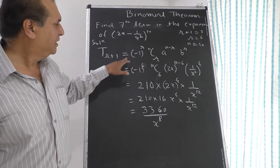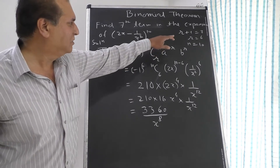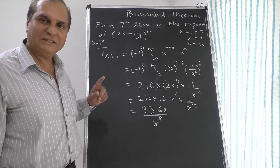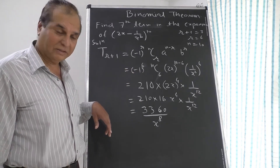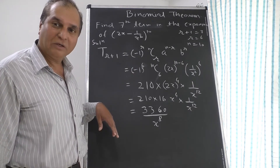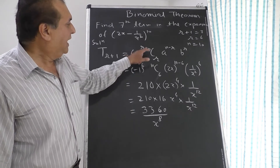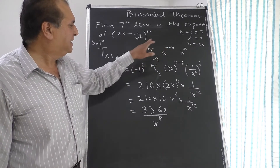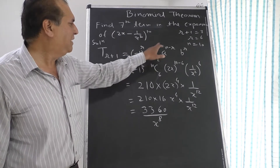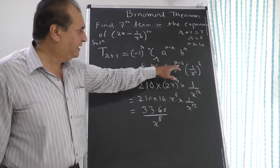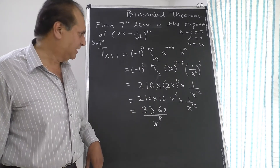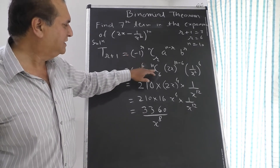a is 2x raised to (n minus r), and b is 1 upon x squared raised to r. Putting the values of a, b, r, and n: (-1) raised to 6 — since minus 1 to an even power is always 1, we can ignore it. Then we have 10C6, with a equal to 2x raised to (10 minus 6), and b equal to 1 upon x squared raised to 6.